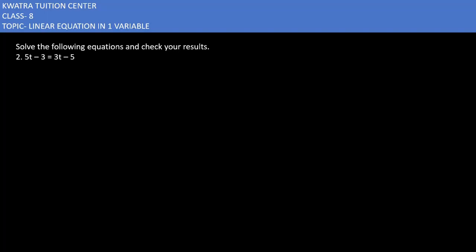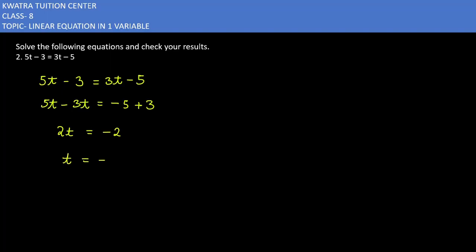We have to solve the equation and check the result. We have 5t minus 3 is equal to 3t minus 5. Take the variables on one side and the numbers on the other side: 5t minus 3t equals 5 minus 3, so 2t is equal to minus 2, which gives t is equal to minus 1.